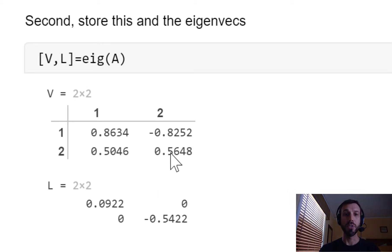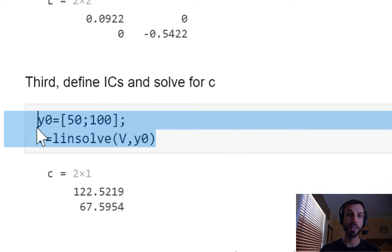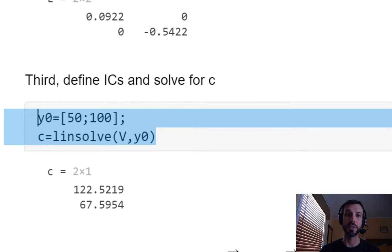In order to solve our initial value problem we also need to solve for the constant C, which we discussed in class can be done using the linsolve command, and results in the two coefficients C1 and C2 given in the vector C displayed below.